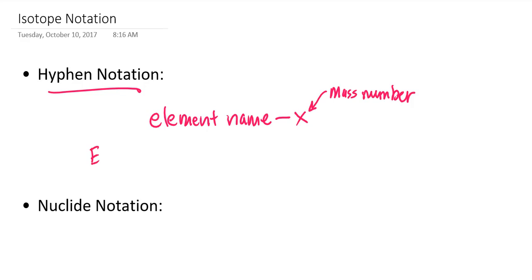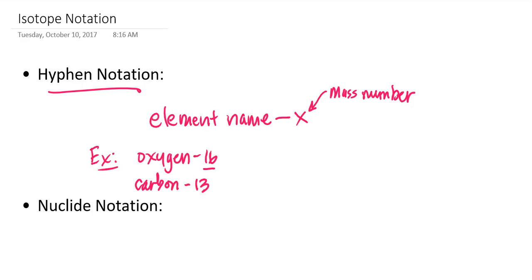For example, if I write oxygen-16, then I'm letting the reader know that I'm discussing an isotope of oxygen and that oxygen isotope has a mass number of 16. Another example would be carbon-13, where the nucleus of the isotope is a carbon nucleus and the mass number is 13, meaning that the sum of the neutrons and the protons in the nucleus is 13.